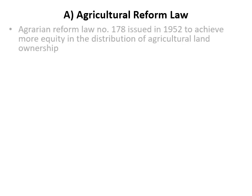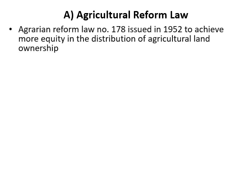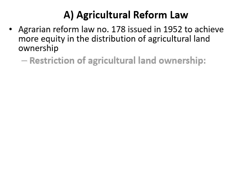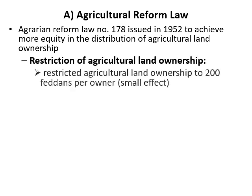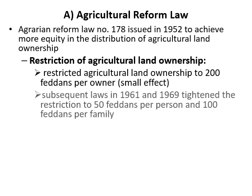The Agricultural Reform Law, Law Number 178, was issued in 1952 to achieve more equity in the distribution of agricultural land ownership. Ownership was limited to just 200 feddans per owner, then later decreased to just 50 feddans per person and 100 feddans per family.